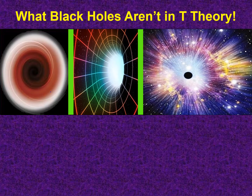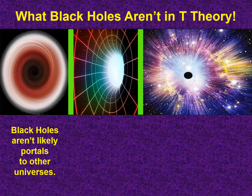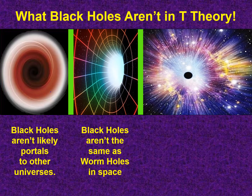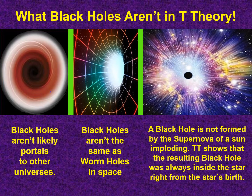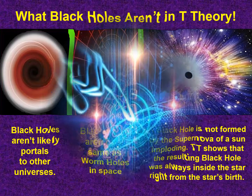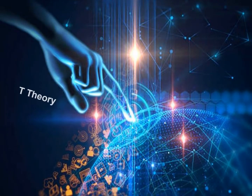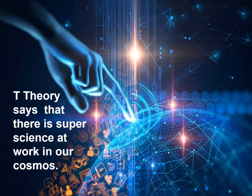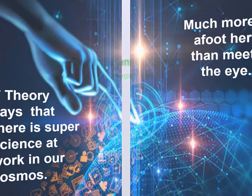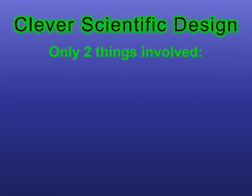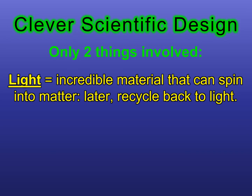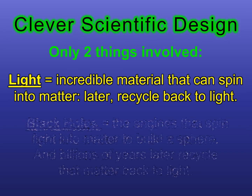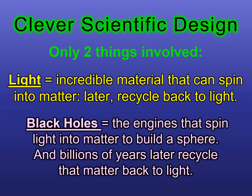What black holes aren't in Trillion Theory: black holes aren't portals to other universes and they aren't wormholes in space. A black hole is not formed by the supernova of a sun exploding — Trillion Theory shows that the resulting black hole was always inside of the star, right from the star's birth. Trillion Theory says there is super science at work in our cosmos. Only two things are involved: light is the incredible material that can spin into matter and later recycle back to light, and black holes are the engines that spin light into matter to build a sphere and, billions of years later, recycle that matter back to light.